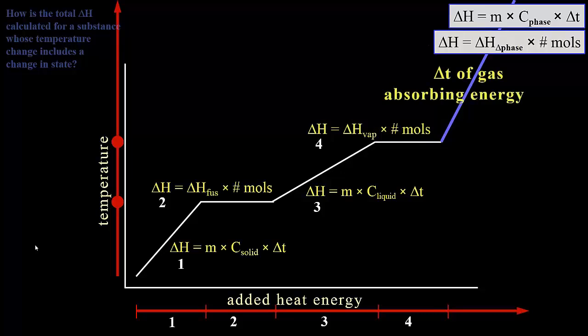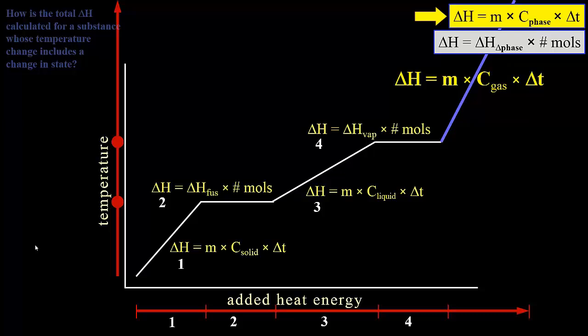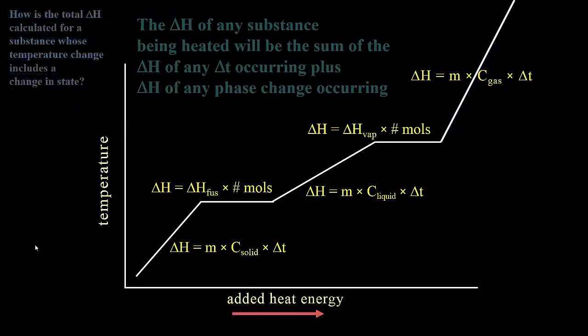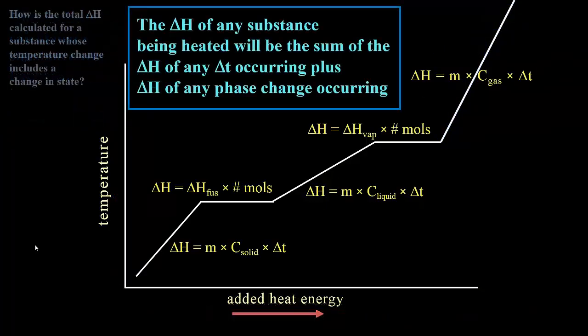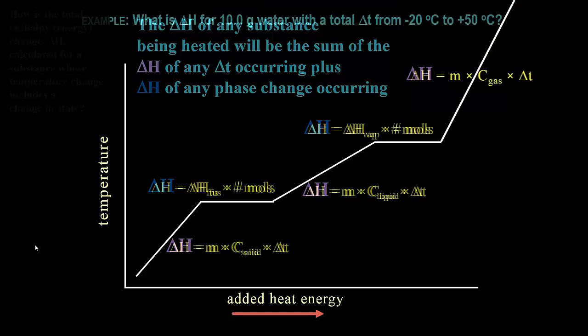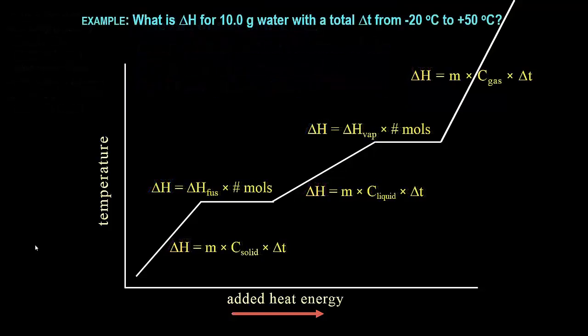Finally, the last energy change produces a temperature change in the gas phase, and so the specific heat of the gas is used in this fifth calculation. The total enthalpy change of any substance being heated will be the sum of the delta H of any temperature change occurring, plus the delta H of any phase change occurring. Let's do the first of two example problems.